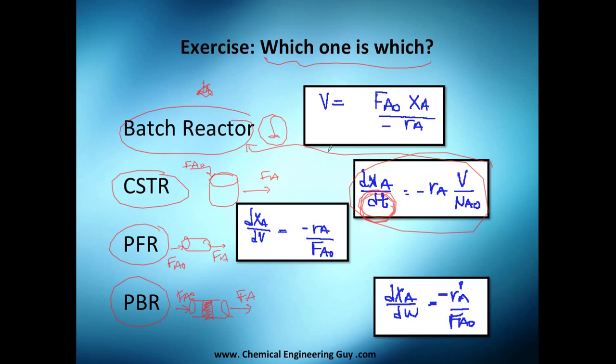Now PBR, the packed bed reactor, depends exactly on the mass of the catalyst. So I'm going to look out for these four equations and see that the only one that takes into consideration that mass is this equation here. By difference, the only one left is this one, so this is my PFR.